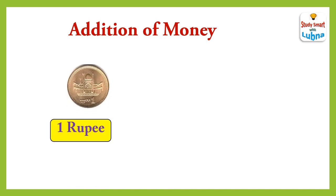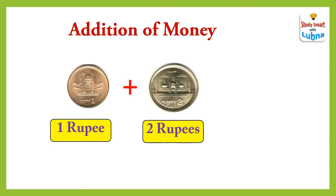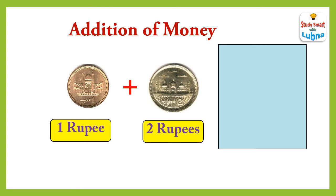When we add 1 rupee coin with 2 rupees coin, what will we get? Let's check. Rupee 1 plus rupees 2 — after adding them, we will get rupees 3.